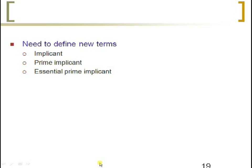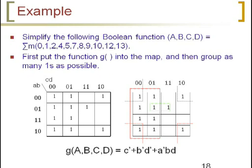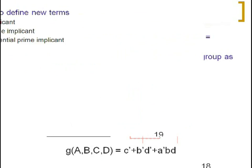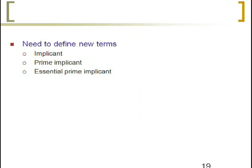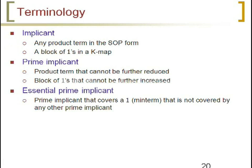We need to define some new terms: implicant, prime implicant, and essential prime implicants. K-maps can also be extended for 5 and 6 variables in the same fashion. An implicant is any product term in the sum-of-products form — a block of 1s in the K-map. Since all product terms or min terms are represented with 1s, any product term in the SOP expression is considered an implicant.